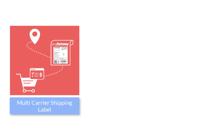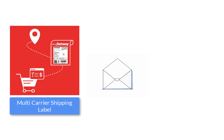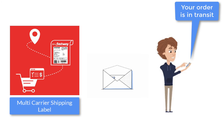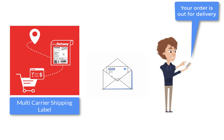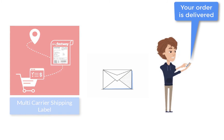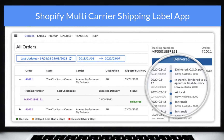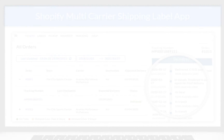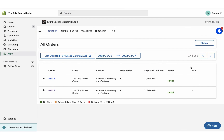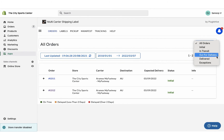The app also notifies the customers on every tracking status update via email, saving you a lot of time and effort. The app also allows merchants to view the live tracking status of all the orders on the shipment tracking dashboard. The dashboard also provides an exclusive view of all the orders based on their tracking statuses.